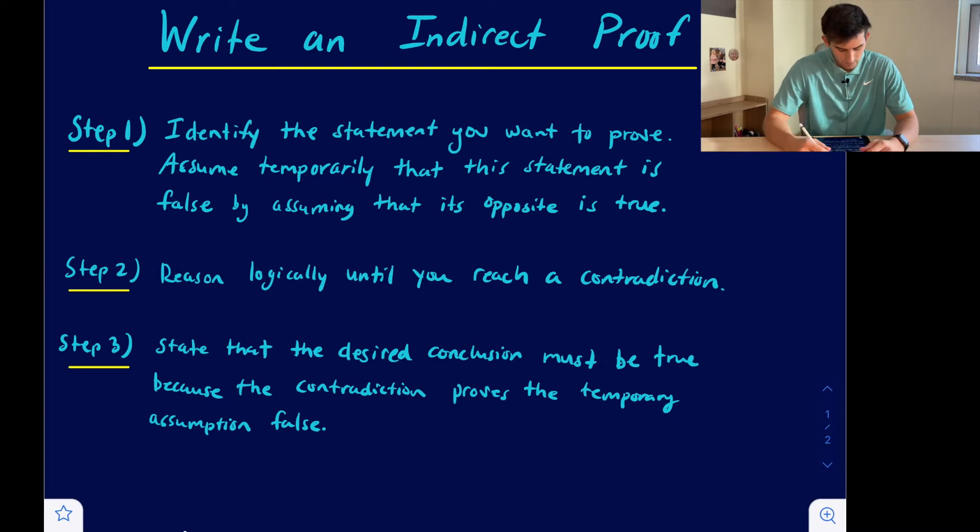So it's a three-step process. Step number one says identify the statement you want to prove, and then we're going to assume temporarily that this statement is false by assuming that its opposite is true.